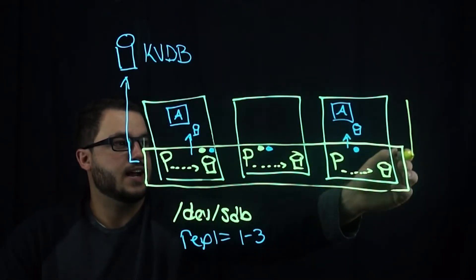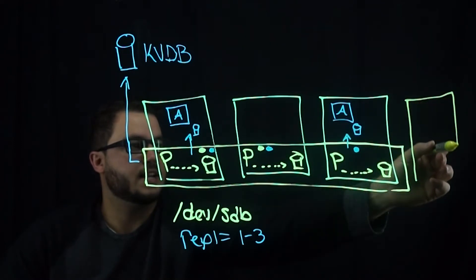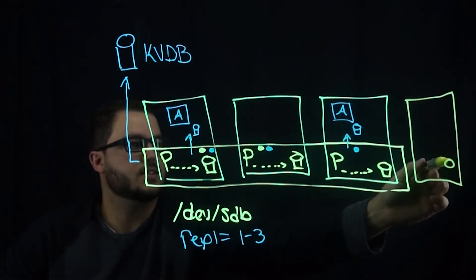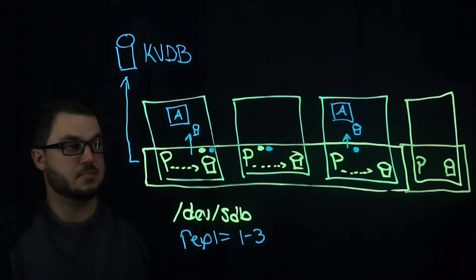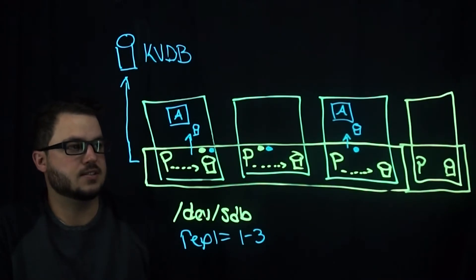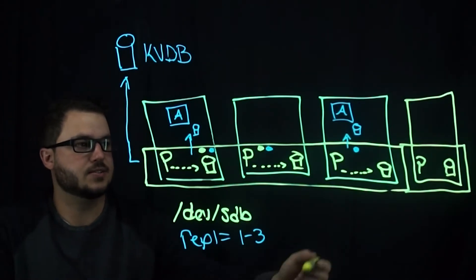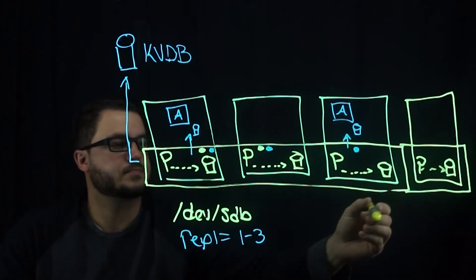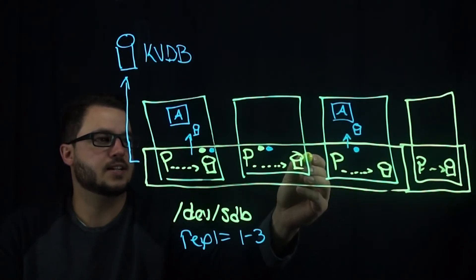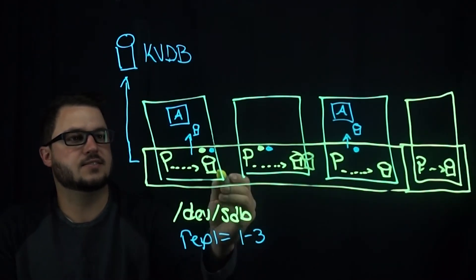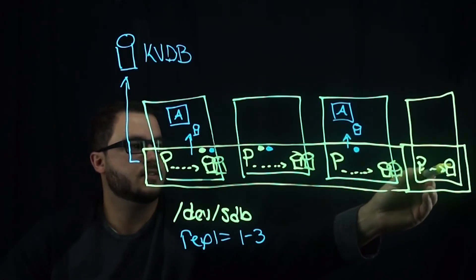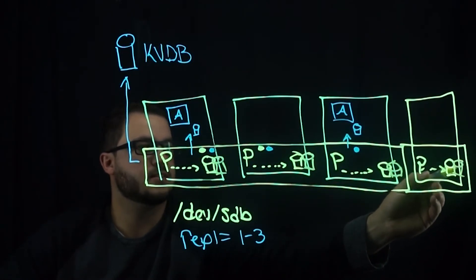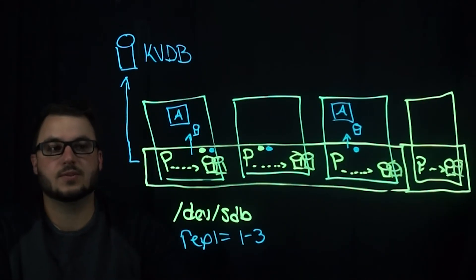You can scale out Portworx by adding a node with another disk, and this will automatically grow the cluster by that set of nodes. Or you can optionally add a disk to your nodes, and that will also be able to scale up the individual nodes in Portworx cluster.